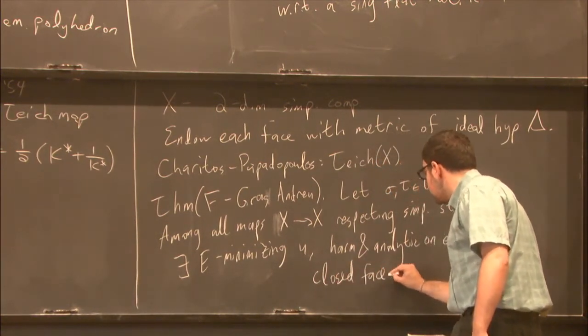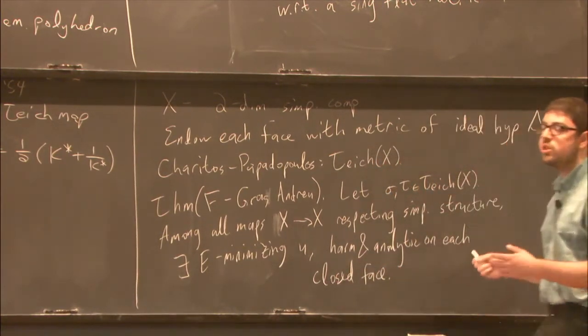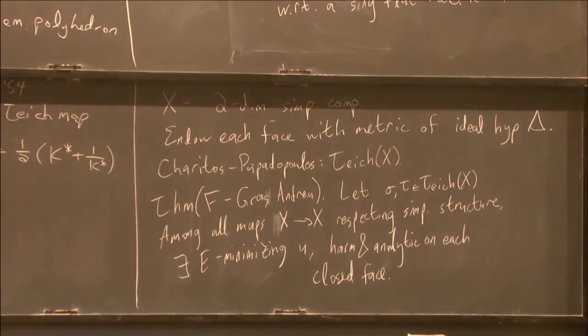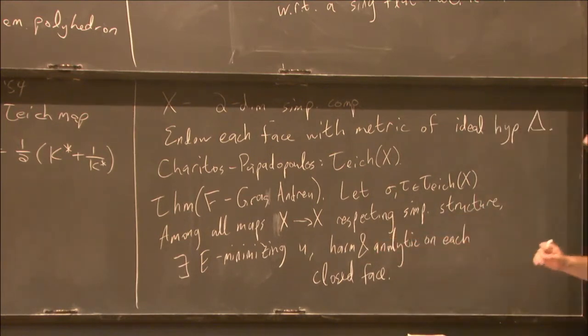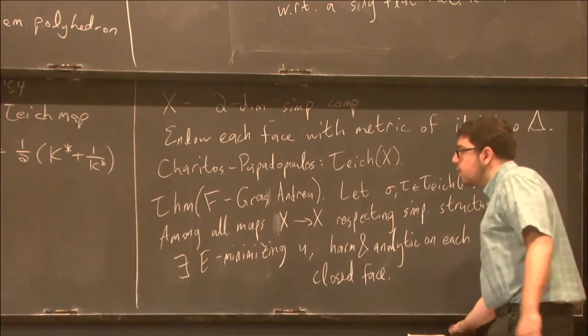So on each closed face of x, which is an ideal hyperbolic triangle, including its edges, we have a classical harmonic analytic map.